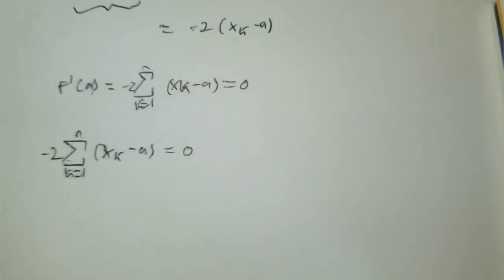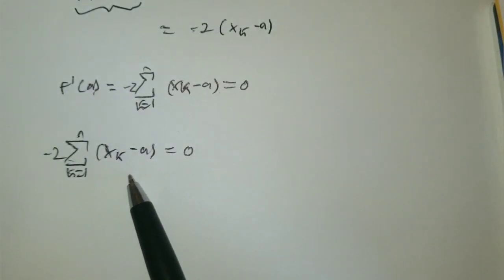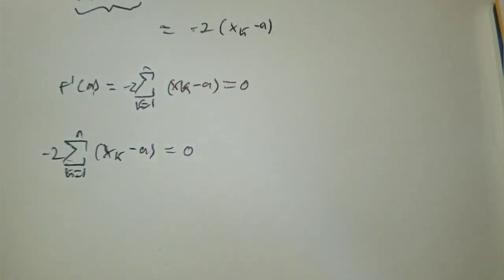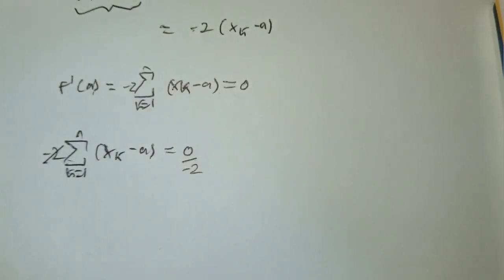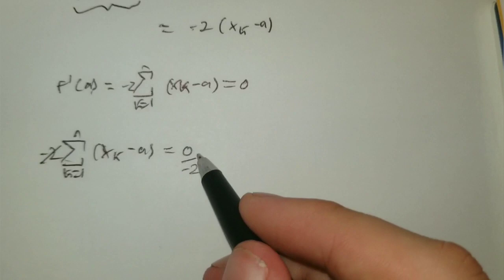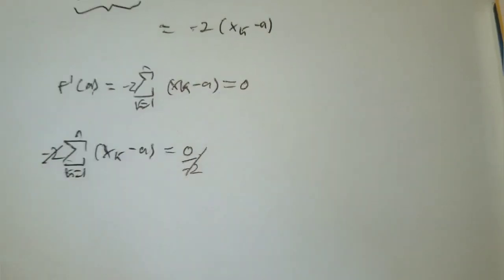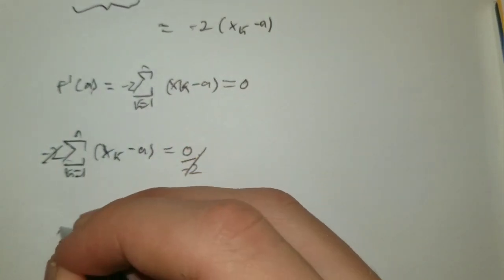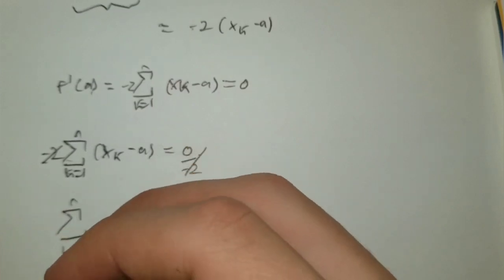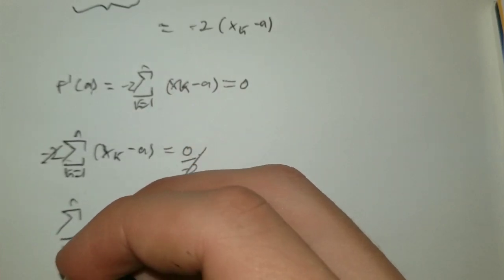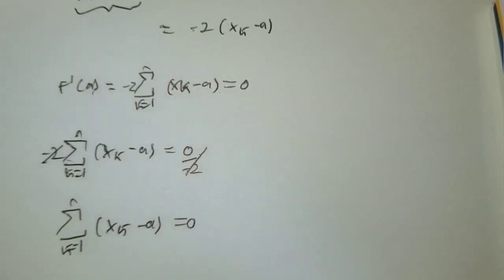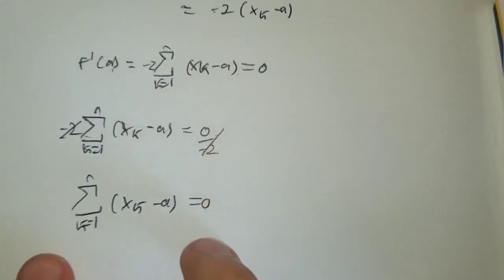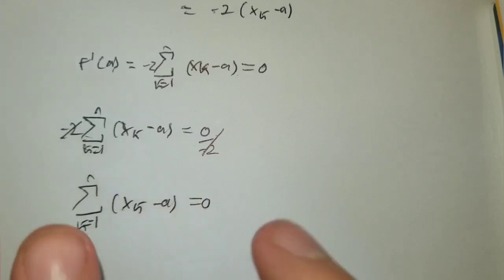is equal to zero. Now what we can do here is just divide by two. This is just equal to zero anyways so the series must be equal to zero.